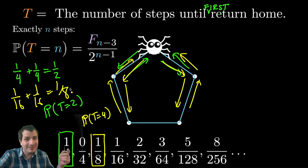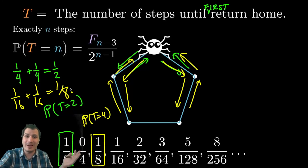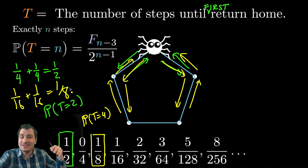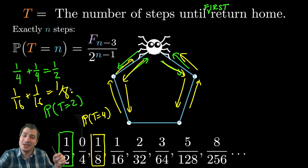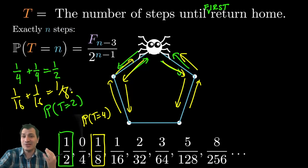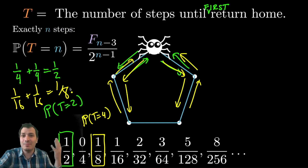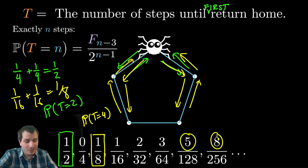If you ask what is the chance he will get home in exactly four steps, it's going to be one eighth. He can go out and back on the left again, and on the right again, giving one sixteenth plus one sixteenth equals one eighth for the probability T equals four. As you get to higher values, like exactly eight steps, it's going to be a complicated path with a lot of lefts and rights, and it's not easy to see how you would count the number of possible paths. But it's going to turn out that they're the Fibonacci numbers.